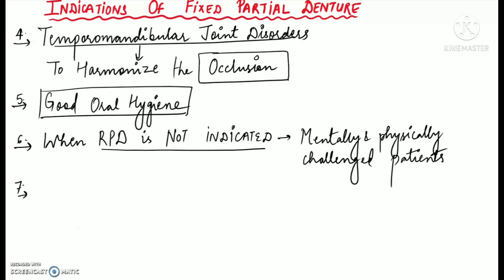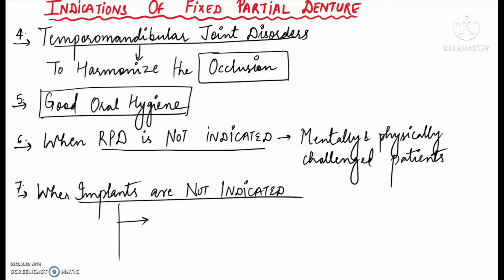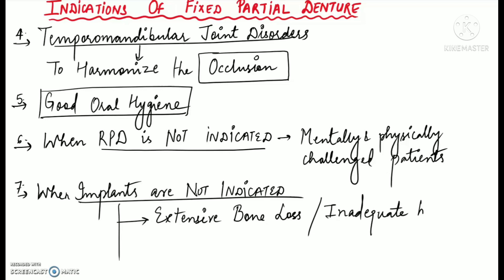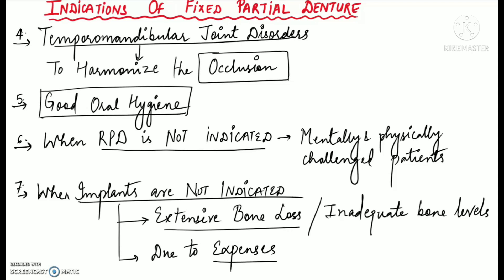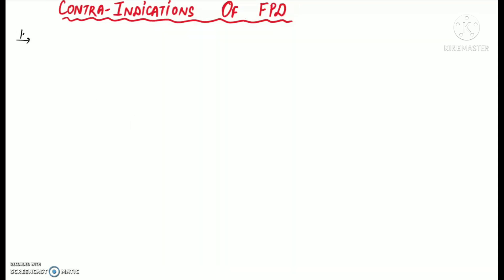FPD can be indicated to replace missing teeth when implants are not indicated — for example in patients with extensive bone loss, inadequate bone levels, or in patients who cannot afford implants as a treatment option due to the expensive treatment. Now let's talk about the contraindications of fixed partial dentures.